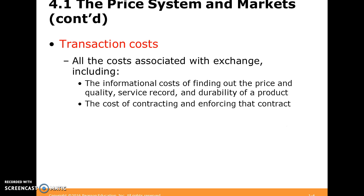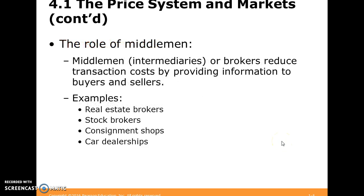Transaction costs can include information costs — how long does it take me to find out about the quality of something, or how long does it take me to figure out if there have been any problems that this thing has had in the past? This allows us to think about what is the role of middlemen in an economy. These middlemen oftentimes are brokers of information — they reduce transaction costs.